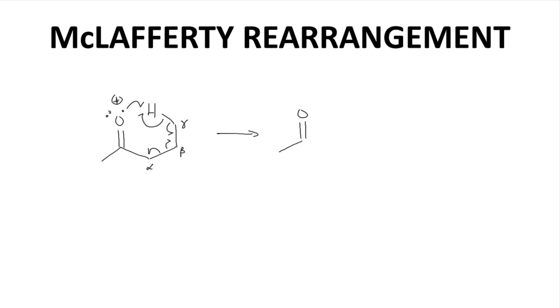So here's the outcome of that process. I'll draw on that CH2. There's our alpha. This pathway is called the McClafferty rearrangement. The result is a new radical cation, and it has an even Mz of 58.